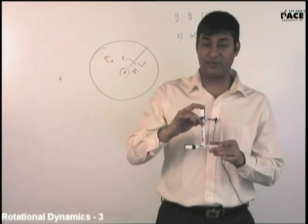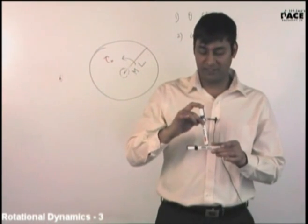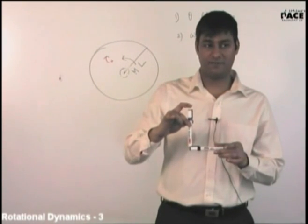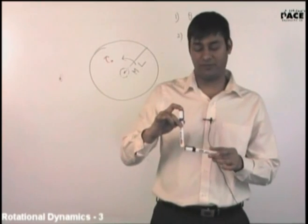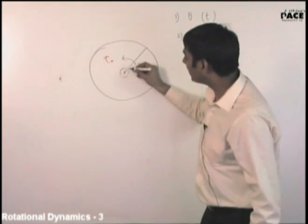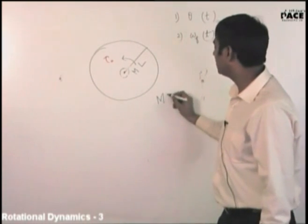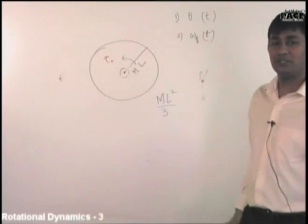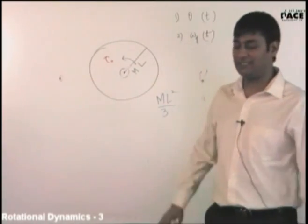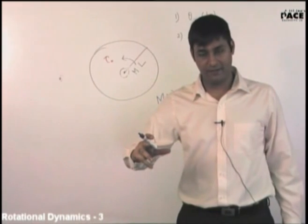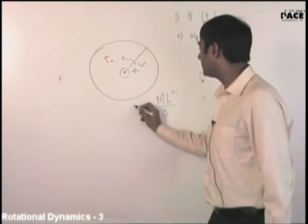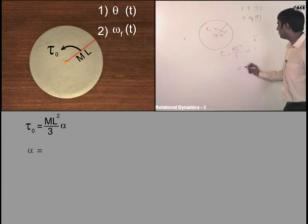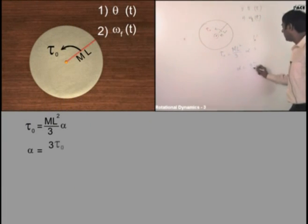Parallel axis theorem. The moment of inertia about the center axis was ML squared by 12, plus M times (L/2) squared. Finally, you get the moment of inertia about this end axis as ML squared by 3. The moment of inertia is remaining constant. The torque is constant. So net torque equals I alpha. Therefore alpha equals 3 tau naught upon ML squared.